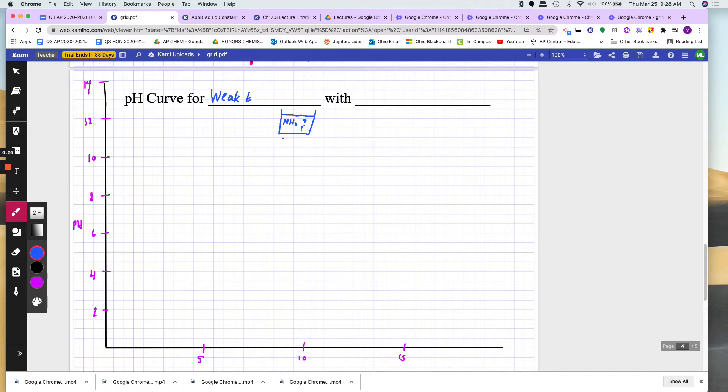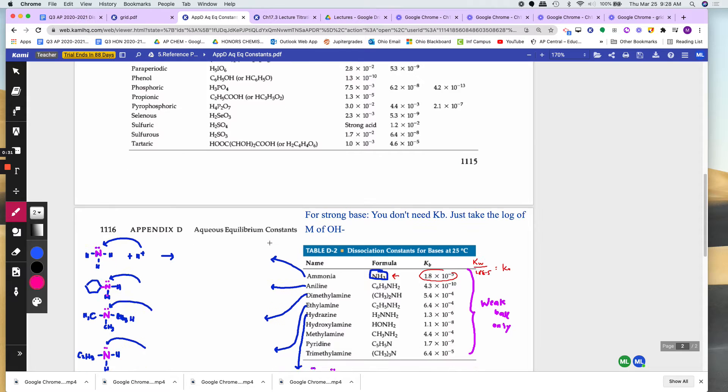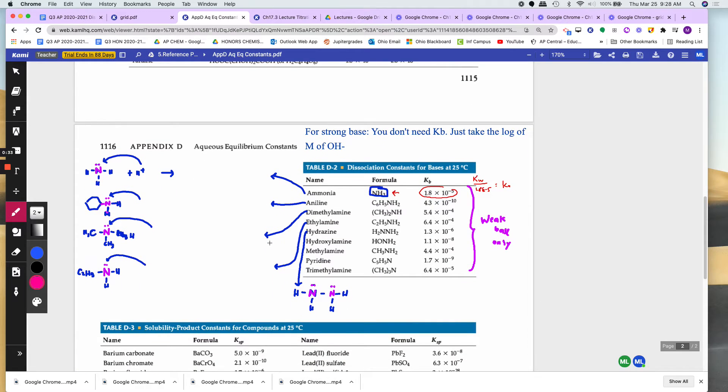For the weak bases, we are going to look at our Appendix D. In Appendix D, the bases are here. Of course, we are not going to pick something without hydroxide. That would be a strong base. So a weak base would be something with nitrogen. Here are some common weak bases, they all have nitrogen. The lone pairs will accept the proton there to become NH4+. So let's pick the easiest one, NH3. The Kb for that one is 1.8E-5.